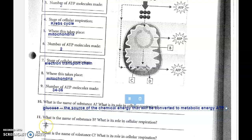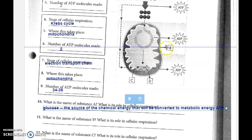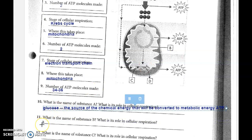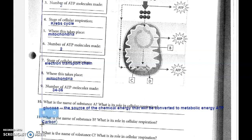Number 11 says: what is the name of substance B and what is its role in cellular respiration? Substance B back up here — that was the carbon dioxide that's been given off as a waste product. It's taking those extra carbons out, putting that carbon back into the carbon cycle. So it is carbon dioxide, and it is given off as a waste product or byproduct.